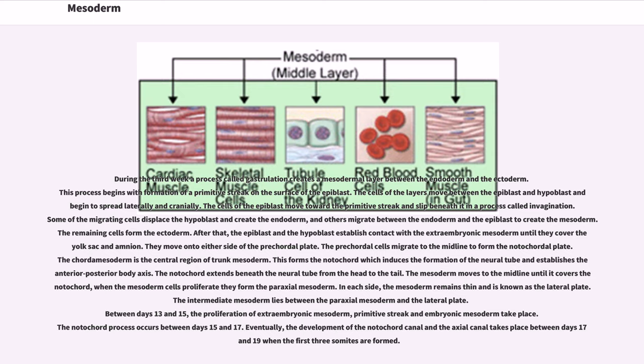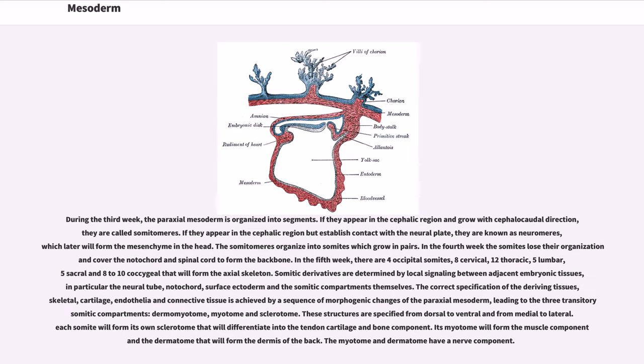The notochord extends beneath the neural tube from the head to the tail. The mesoderm moves to the midline until it covers the notochord. When the mesoderm cells proliferate they form the paraxial mesoderm. In each side, the mesoderm remains thin and is known as the lateral plate. The intermediate mesoderm lies between the paraxial mesoderm and the lateral plate. Between days 13 and 15, the proliferation of extraembryonic mesoderm, primitive streak and embryonic mesoderm take place. The notochord process occurs between days 15 and 17. Eventually, the development of the notochord canal and the axial canal takes place between days 17 and 19 when the first three somites are formed.